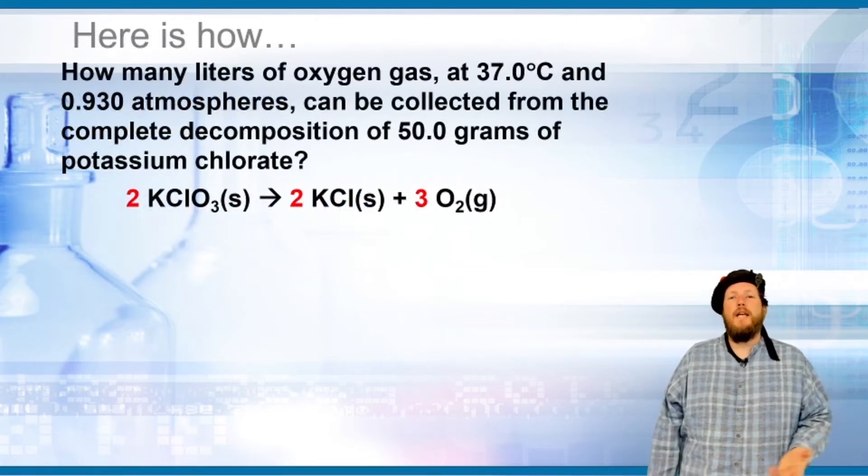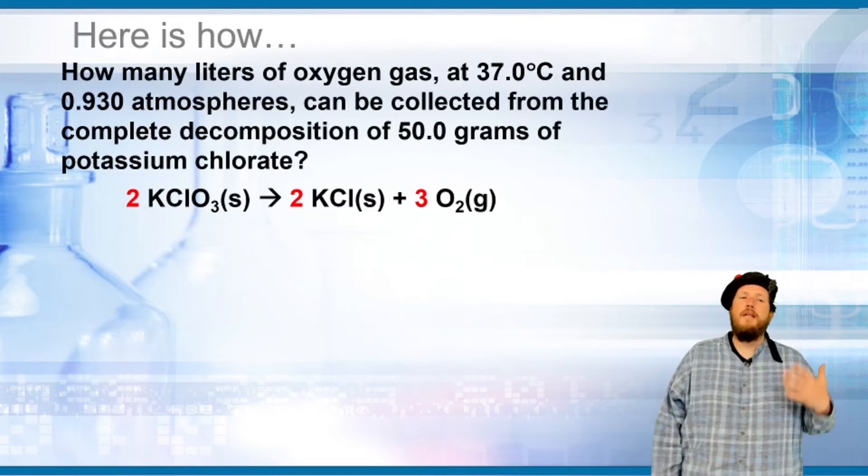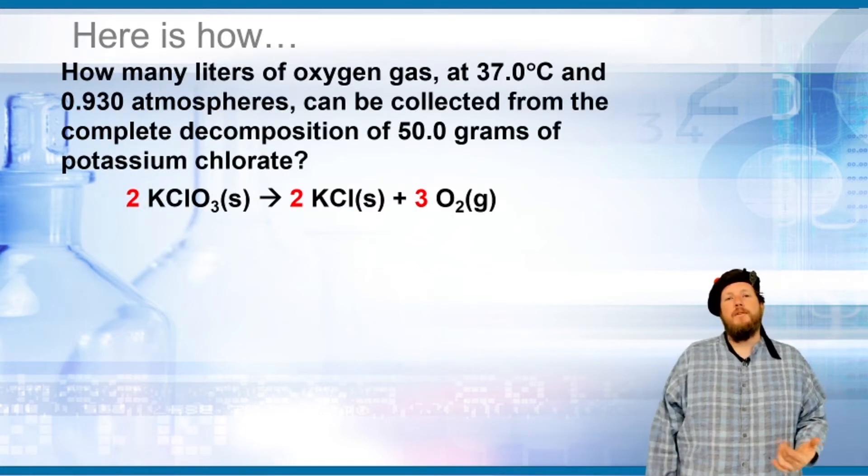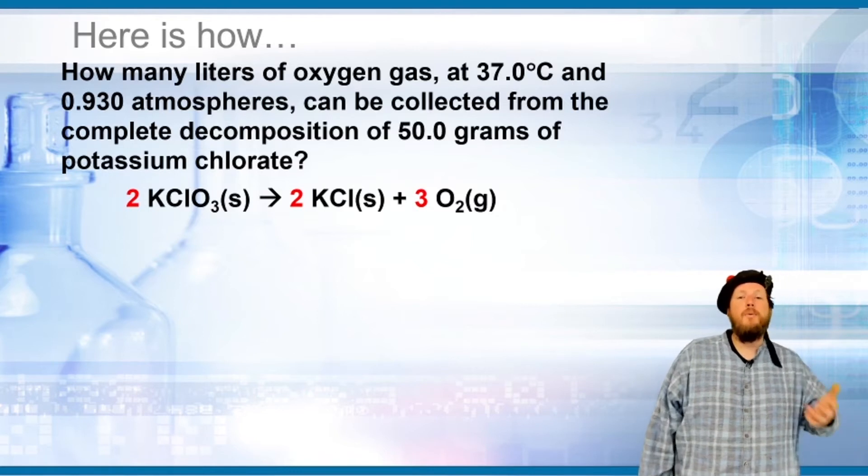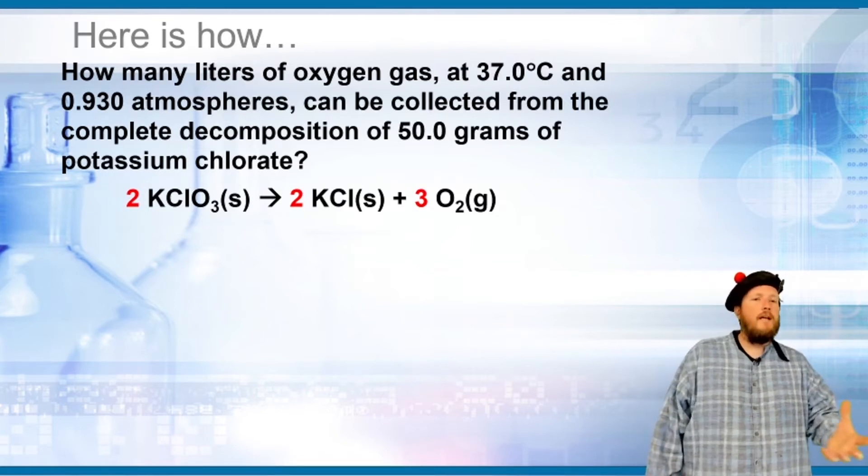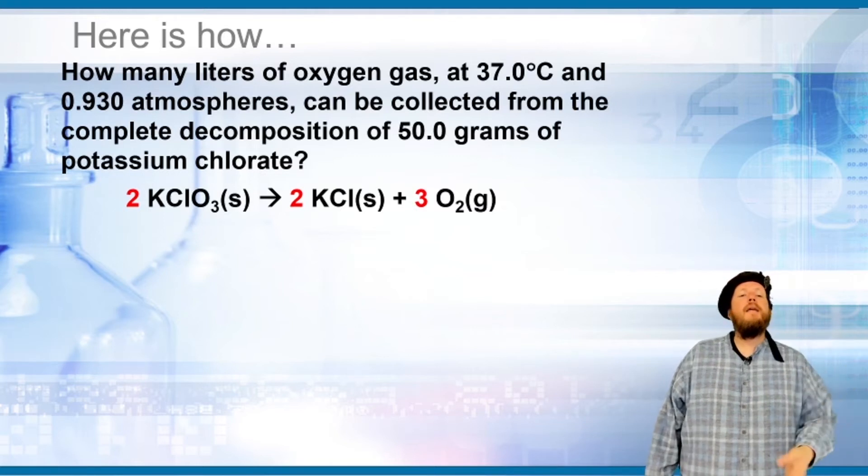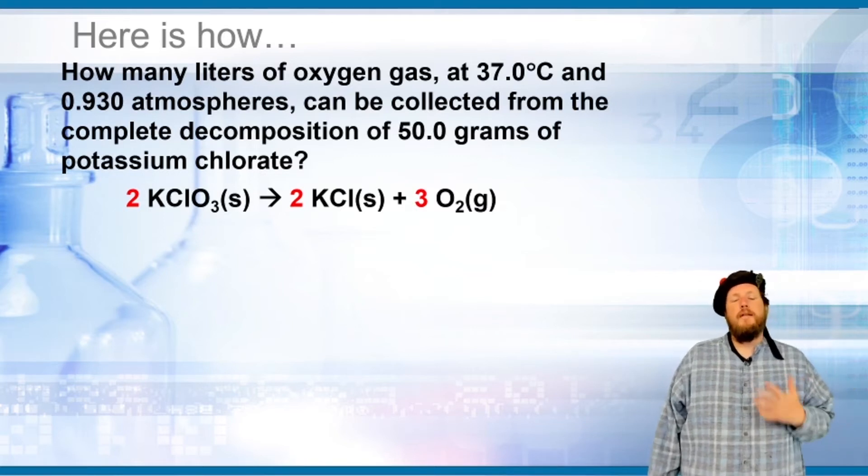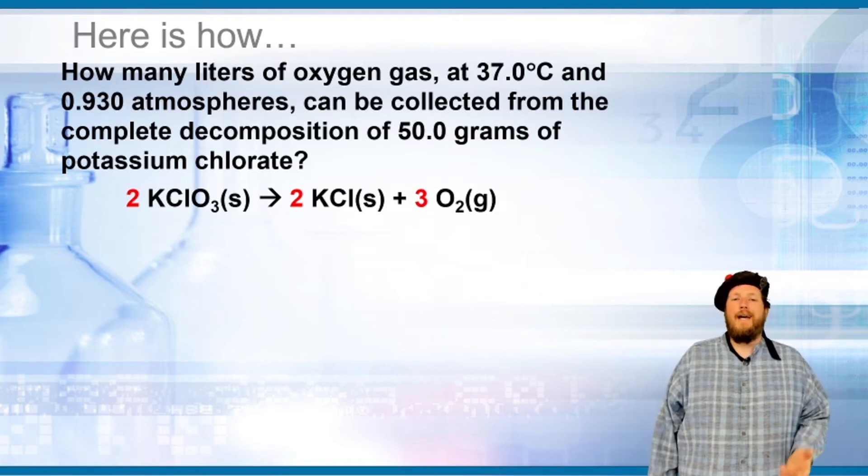How many liters of oxygen gas at 37°C and 0.930 atmospheres can be collected from the complete decomposition of 50.0 grams of potassium chlorate? Here's the equation: 2 KClO₃ becomes 2 KCl plus 3 O₂ gas.